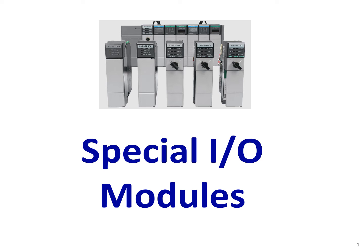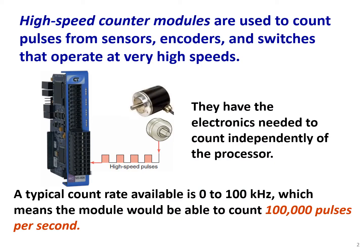Special I/O modules. So far we talked about discrete and analog I/O modules. Now we want to move on to special types of I/O modules. High-speed control modules are used to count pulses from sensors, encoders, and switches that operate at very high speed.